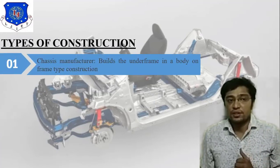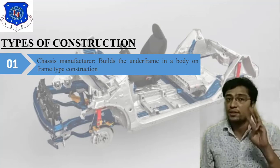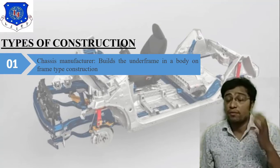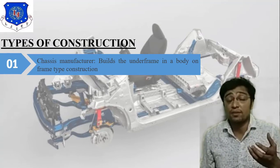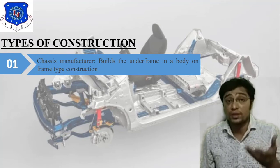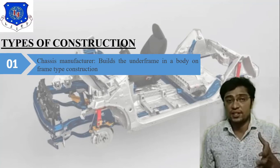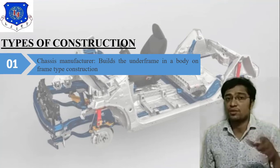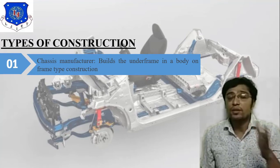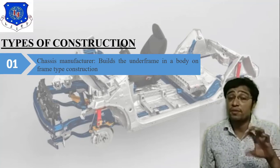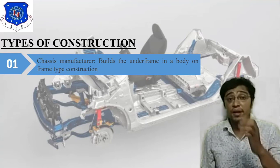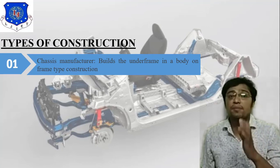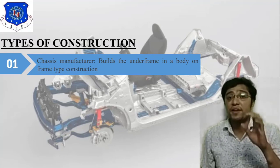The first type is chassis manufacturer. We need to understand what a chassis manufacturer is, how it is implemented, and its importance. A chassis is the road-connecting frame joined to the axle of a four-wheeler. The chassis manufacturer builds the under-frame in a body-on-frame type construction. According to different types of vehicles, we need to understand different types of chassis.